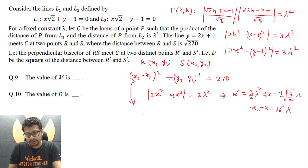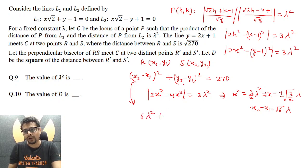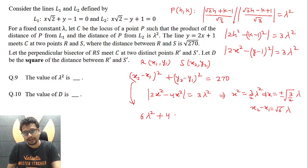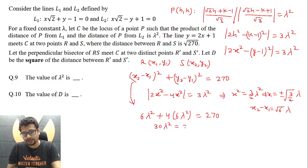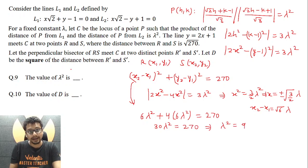So (x₂ − x₁)² becomes (√6 · λ)² = 6λ². For (y₂ − y₁)²: since y = 2x + 1, we get y₂ − y₁ = 2(x₂ − x₁), so (y₂ − y₁)² = 4 · 6λ² = 24λ². Adding both terms: 6λ² + 24λ² = 30λ², and this equals 270. So λ² = 9. That is the answer to question 9: λ² = 9.